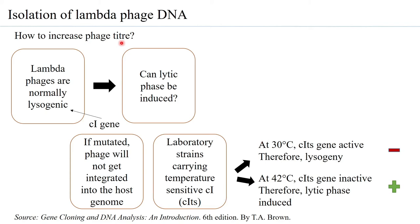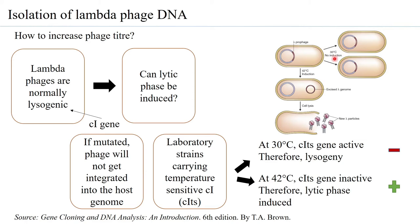At 30°C the bacteria will multiply, and the pro-phage will multiply along with it. But at 42°C the phage will excise itself out from the genome DNA, and the excised lambda genome will multiply and form multiple lambda particles. You can clearly see how the titer of the phages is high because of the lytic cycle, compared to just a low number in the lysogenic case.